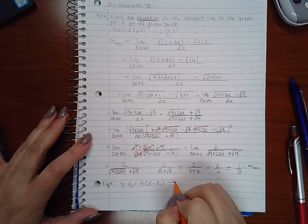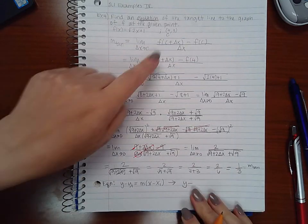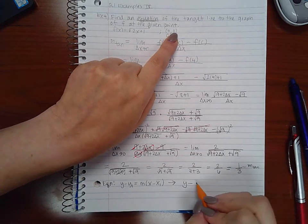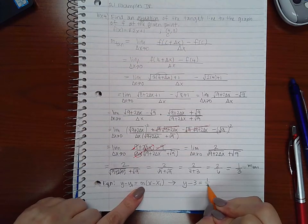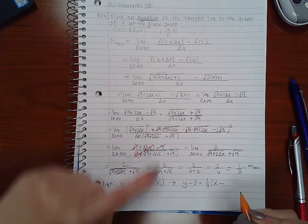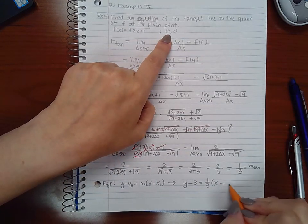So when I do that, I get y minus my y value here is three, equal to m which is my slope, one third, times x minus x1 which is four.